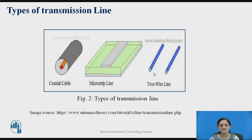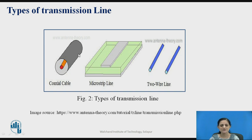Let us consider the types of transmission line. There are different types of transmission line through which energy can be transmitted from one place to another. The coaxial cable is one type of transmission line. The microstrip line and the two-wire transmission line are also used to transmit energy from one place to another.